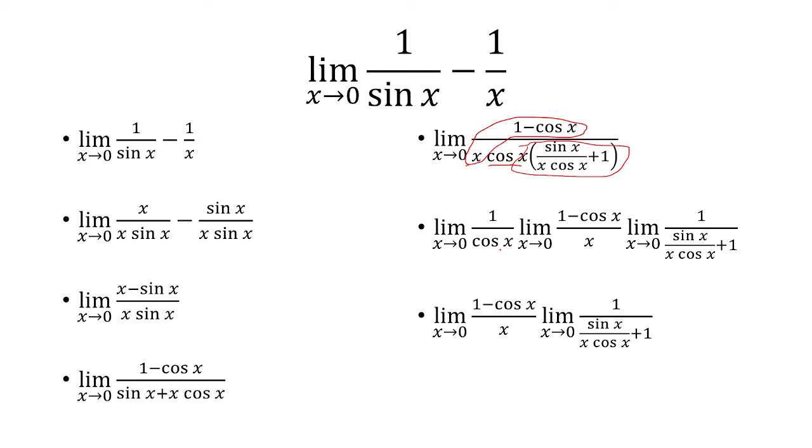We know the limit as x approaches 0 of 1 over cosine of x is 1. So now it just comes down to solving these two limits.